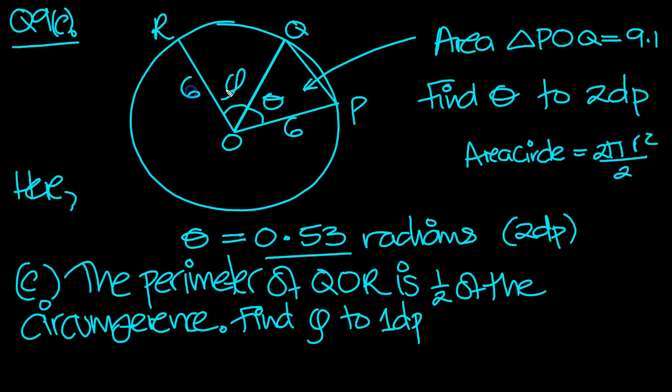So the perimeter will be, because it's radius 6, this will be 6 and this will be 6. So here we've got 6 plus 6 plus the length of the sector, which is r theta, isn't it? That's r phi in this case.